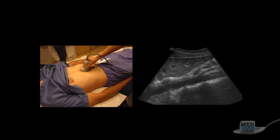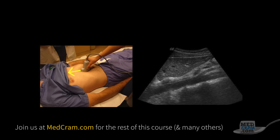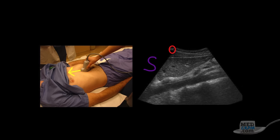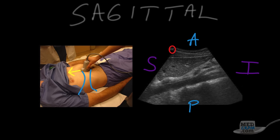In our first example, we see the indicator is pointing up toward the patient's head, or superiorly. Since the screen indicator is on the left side, the left side of the screen is superior, and the opposite side is inferior. Our flashlight is shining from the anterior portion of the patient to the posterior portion, so the top of the screen is anterior and the bottom is posterior. In conventional anatomic planes, this is the sagittal plane — we are slicing the patient with the ultrasound beam in a sagittal orientation.